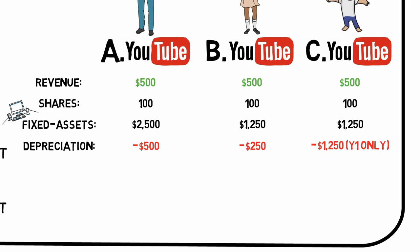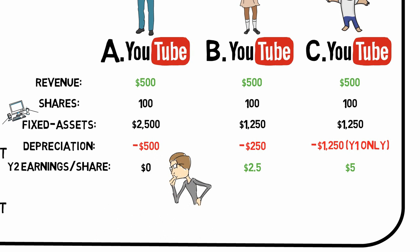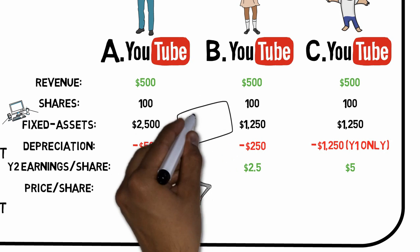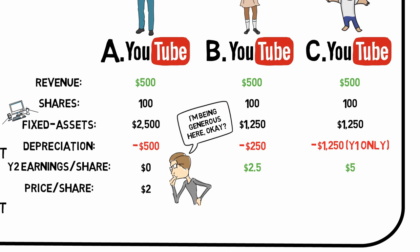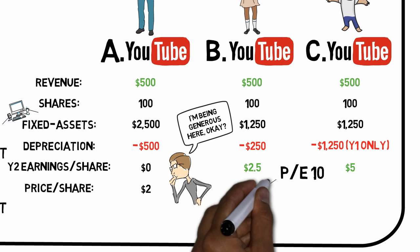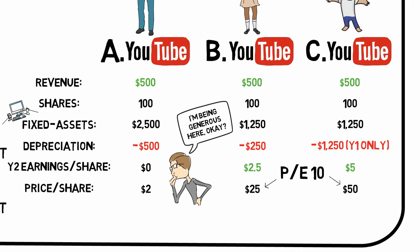Two years later, you decide to invest in one of these businesses. At first glance, when you observe the earnings of year two, it may seem like company A earned nothing at all, B earned $2.50 per share, and C earned $5 per share. The novice investor might pay just a speculative $2 for a share in A, but for B and C he might pay 10 times the annual earnings — $25 and $50 per share respectively.